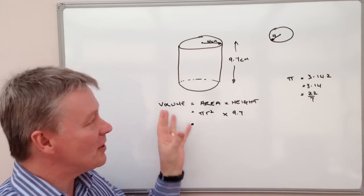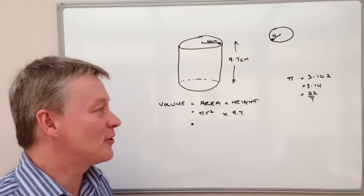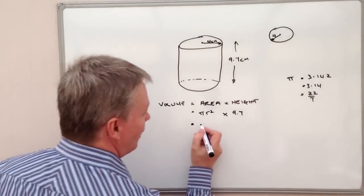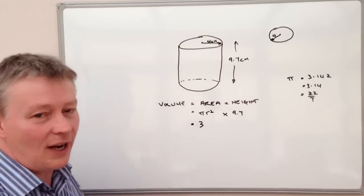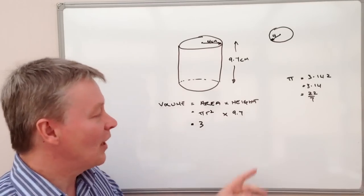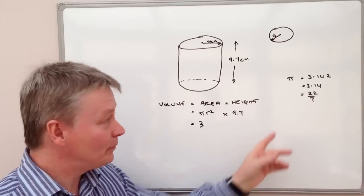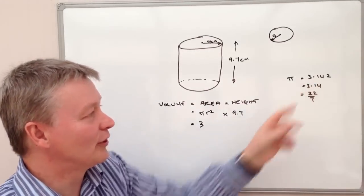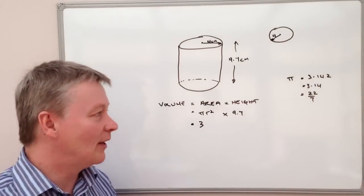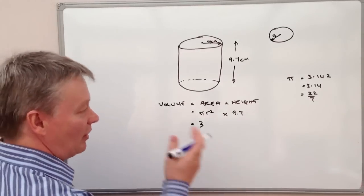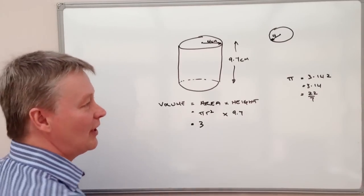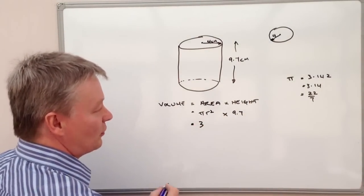For the purposes of this estimation exercise, really a value of pi for us 3 would be absolutely fine. It's close enough, 0.142 is only a relatively small amount, but it's something that you need to perhaps be aware of as a value of pi. But we're going to use 3.